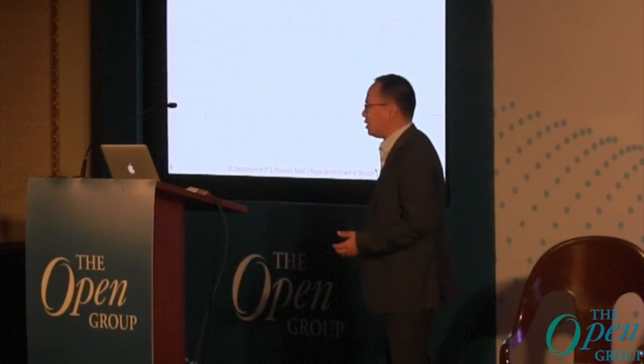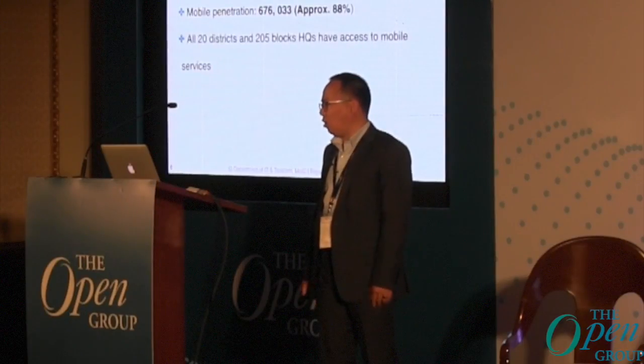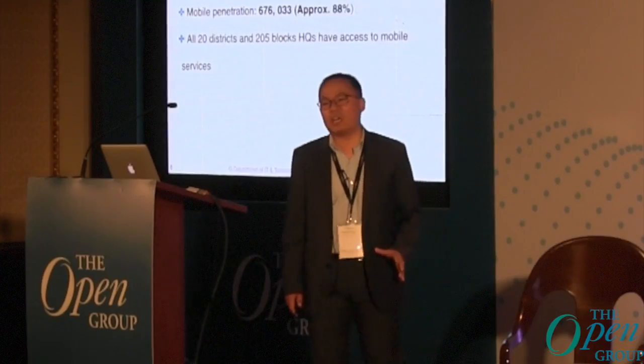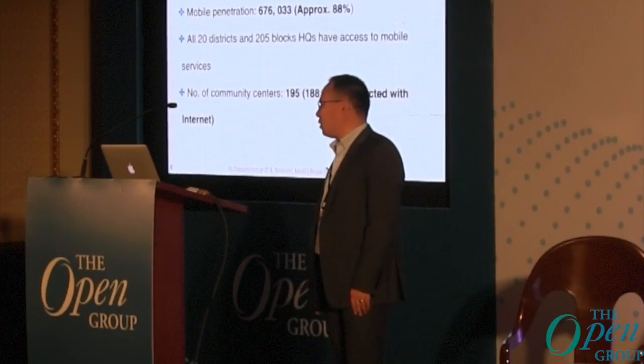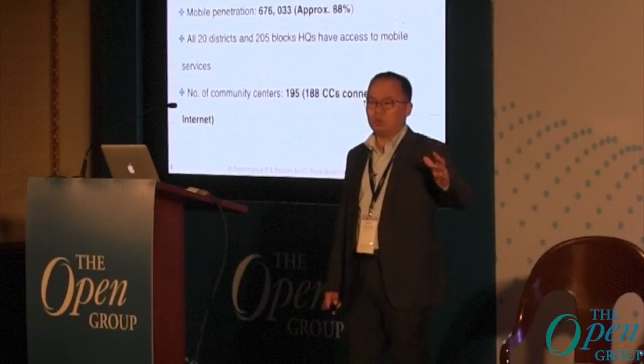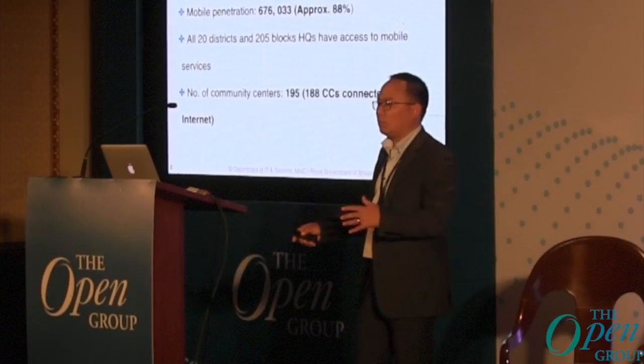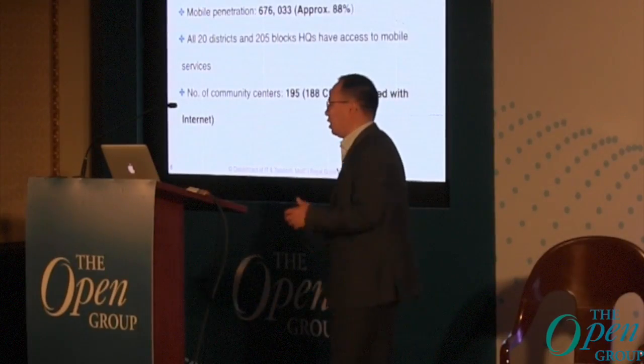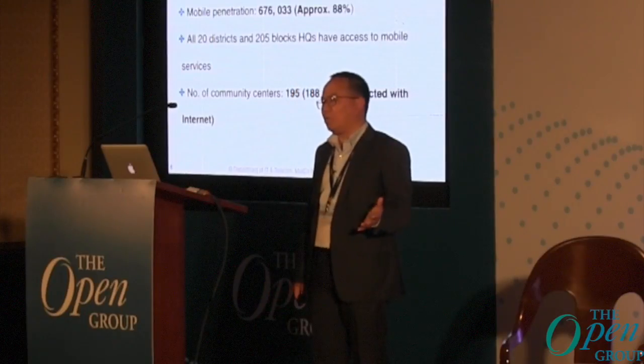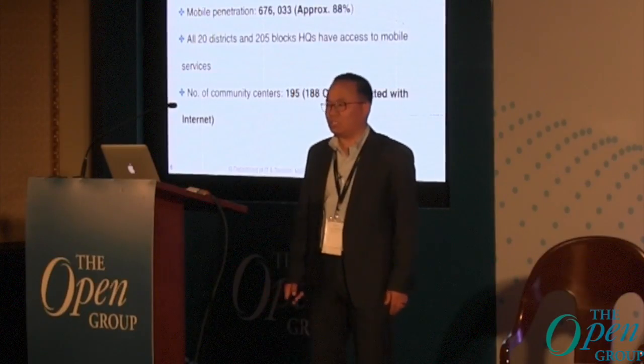A few ICT profiles: we have around 62% of the population currently accessing the internet. Fixed-line, as is the global trend, is declining. Mobile penetration is approximately 88% of the population. All 20 districts and 205 blocks have access to the internet. For rural groups without direct internet access, we have service kiosks called community centers — around 195 community centers, of which 188 are connected to the internet.